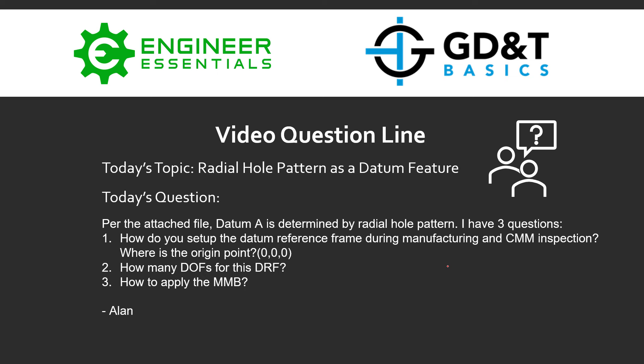There are three questions. First, how do you set up the datum reference frame during manufacturing and CMM inspection? In other words, where is the origin point or the zero-zero-zero point? Next, how many degrees of freedom does this datum reference frame lock down? And lastly, how do you apply the MMB or maximum material condition boundary?